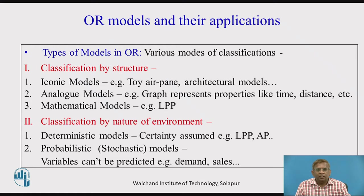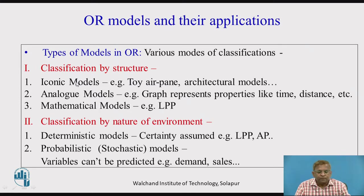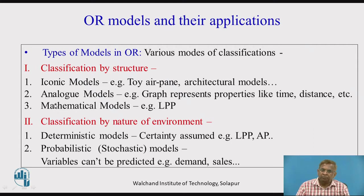Talking regarding the actual types of models, there are various modes that we can think of. The very first mode that we will consider is classification based on the structure. Under this particular mode of classification, we can have three types of models: iconic models, analog models, and mathematical models.